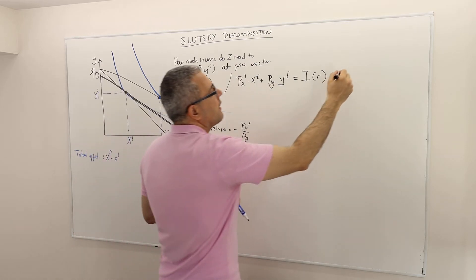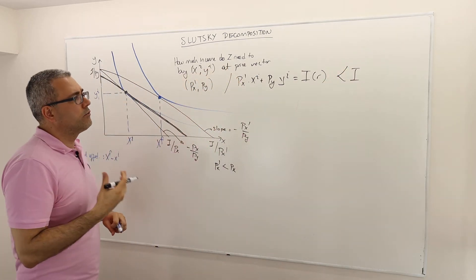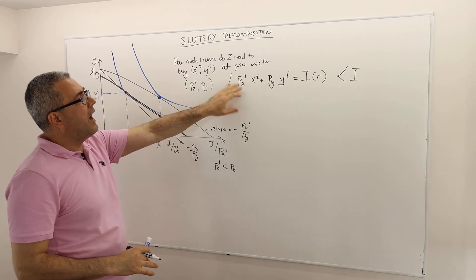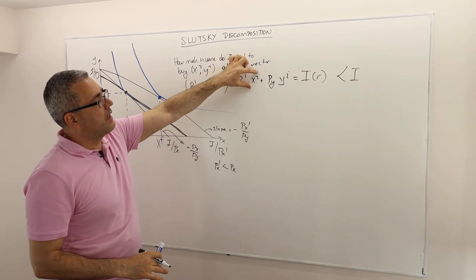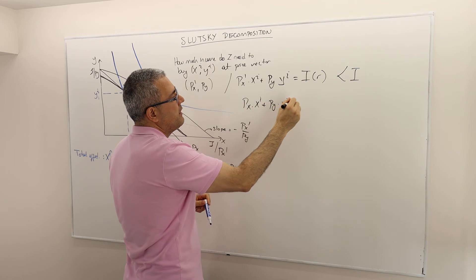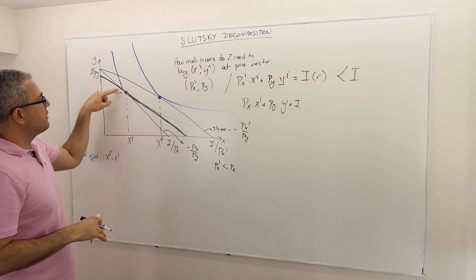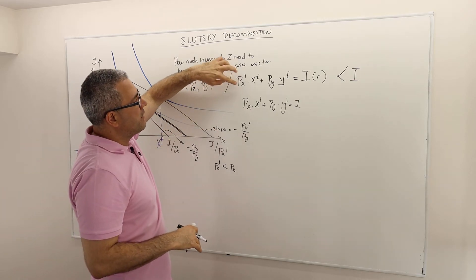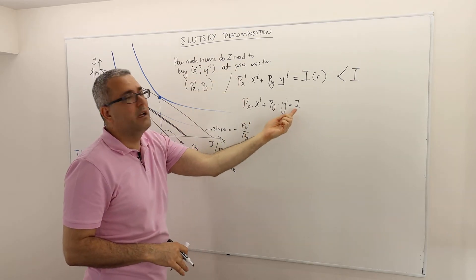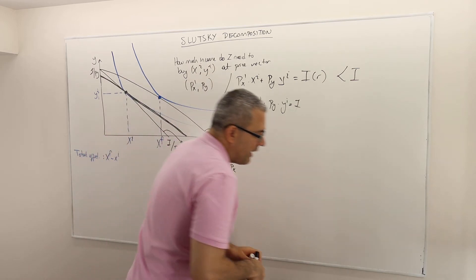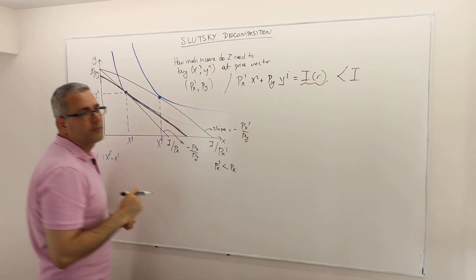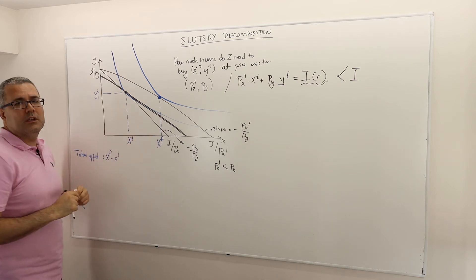This real income is going to be less than the original income I. Why? Because under the original higher prices, PX·X_i + PY·Y_i = I, since it was on the original budget line. Now we're multiplying X_i by the lower price PX prime, so this part is lower than income. So the real income is less than I.